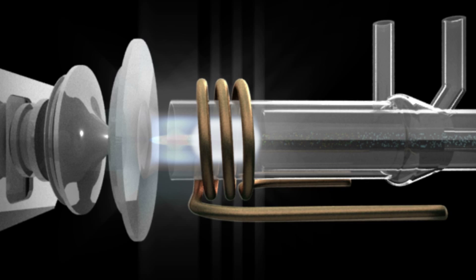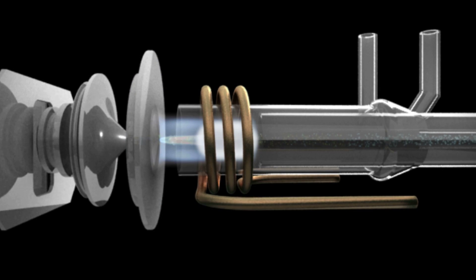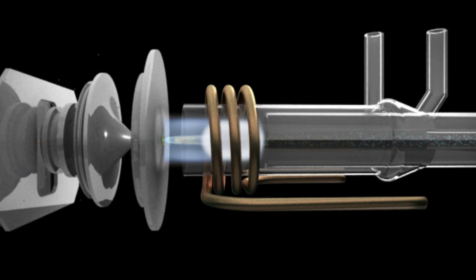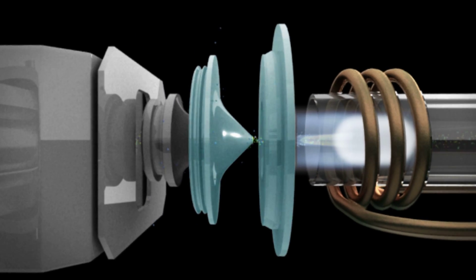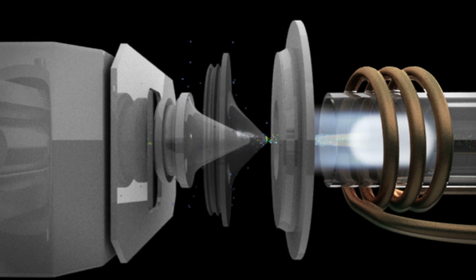As ions leave the plasma in the Nexion 300 ICP-MS, they pass through a unique dual-chambered interface consisting of three cones that produce the most controlled and tightly defined beam available in any ICP-MS system. In addition to the sampler cone and skimmer cone typically found on other instruments, the spectrometer also features an innovative hyper-skimmer cone.